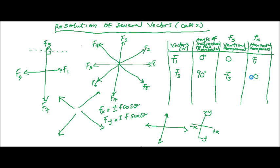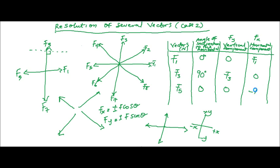The next one is F5. F5 is synonymous to F1, just with a difference in direction — F5 is on negative X. The angle of inclination of F5 is zero degrees. The vertical component is zero because it doesn't have a component on Y, and the horizontal component is negative F5, so that would be minus F5.